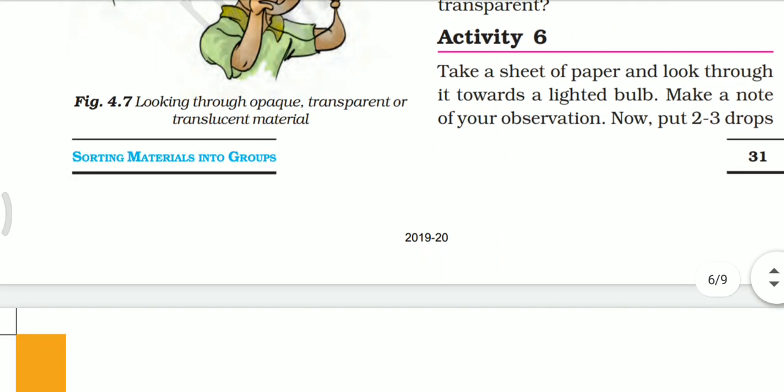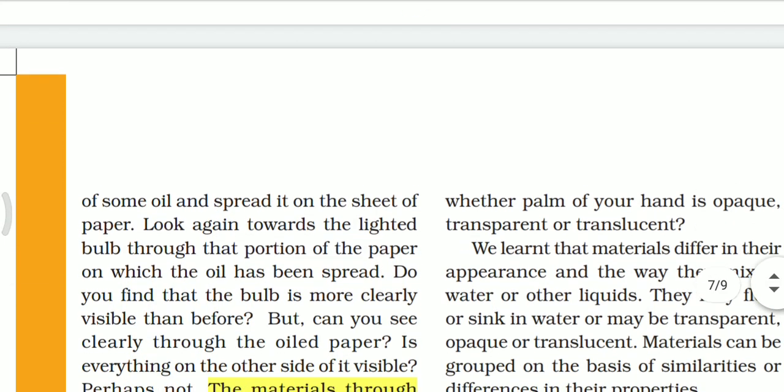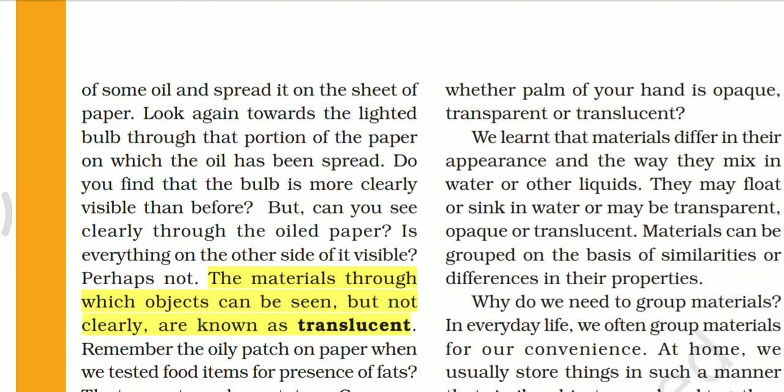Let's perform Activity 6. Take a sheet of paper and look through it towards a lighted bulb. Make a note of your observation. Now put two or three drops of oil and spread it on the sheet of paper. Look again towards the lighted bulb through the paper on which the oil has been spread. Do you find that the bulb is more clearly visible than before?